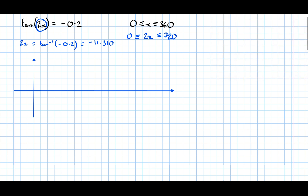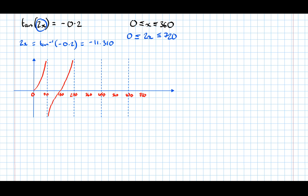We're not going to draw it from 0 to 360 — we've doubled the limits, so we're going to draw it from 0 to 720. Drawing the asymptotes: there's 90 degrees, 180, 270, 360, 450, 540, 630, then 720. Let's draw the tan graph. It doesn't have to be brilliant, but it has to be good enough to be able to recognise the solutions. So there it is, from 0 to 720.